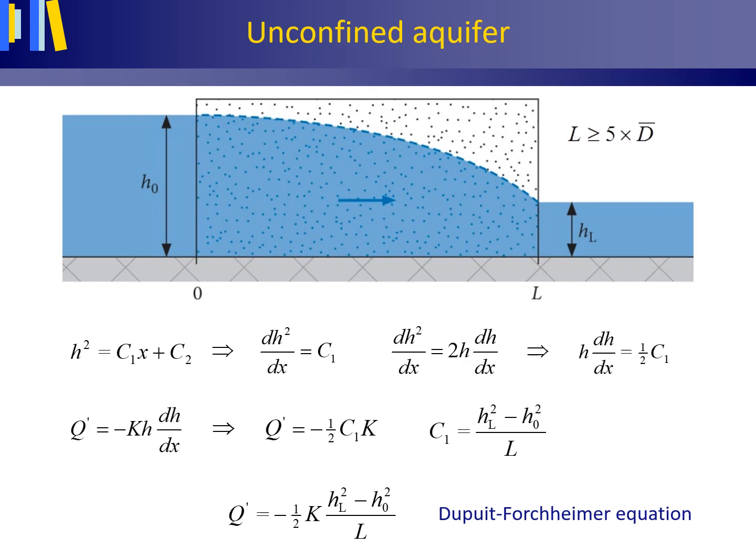Alternatively, and much quicker, we could have differentiated the Laplacian h² equals C1x + C2 to deliver that dH²/dx equals C1. Please remember from an earlier slide that the chain rule teaches us that dH²/dx equals 2h dh/dx, and thus that h dh/dx equals half C1. Again, this will deliver the Dupuis-Forchheimer equation as end result.